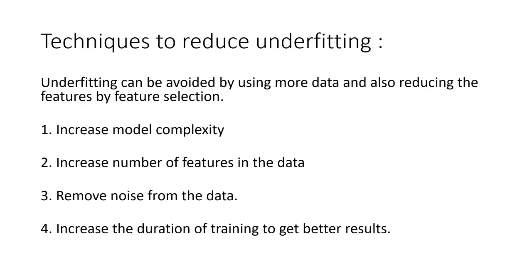But how do we reduce underfitting? Underfitting can be avoided by using more data to train and by reducing irrelevant features through feature selection — applying better features when training your data. The following things can help us reduce underfitting. The first one is to increase model complexity.